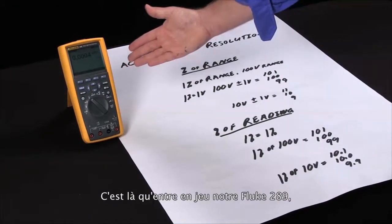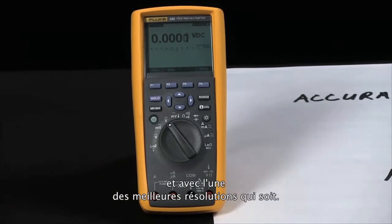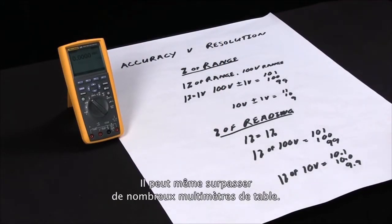And here we have our Fluke 289, which is actually one of the most accurate and highest resolution handheld multimeters you can get. It can actually outperform a lot of bench multimeters.